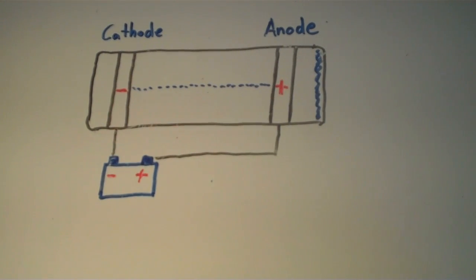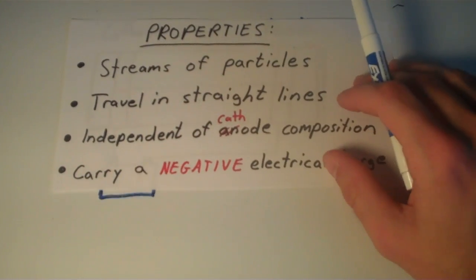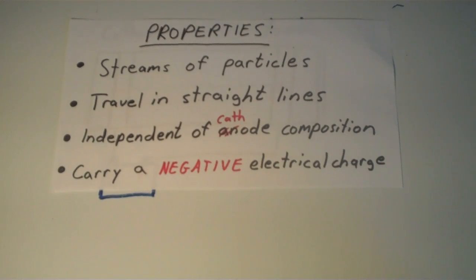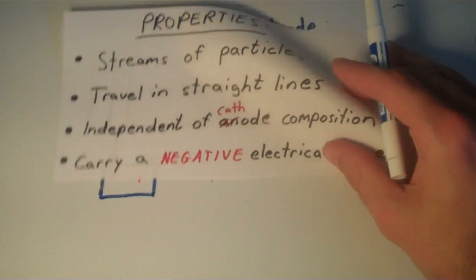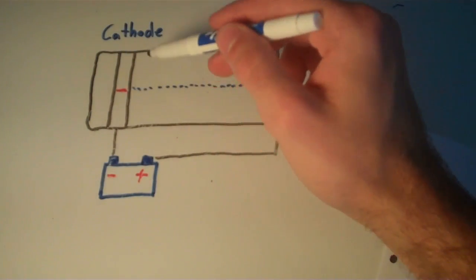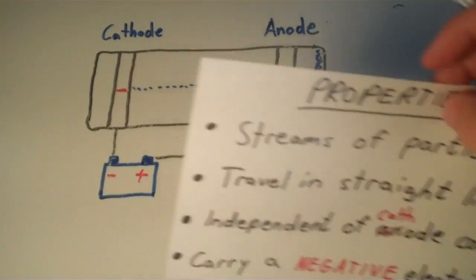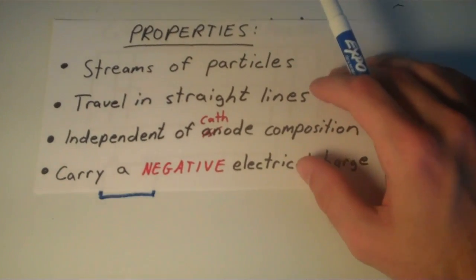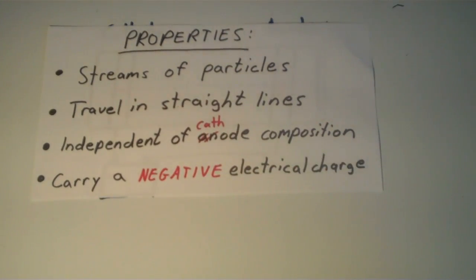In studying cathode rays, J.J. Thompson was able to make a couple of conclusions about the properties of the cathode rays. First of all, he concluded that the cathode rays are actually streams of particles. Secondly, he concluded that these particles travel in straight lines. In addition, he concluded that the cathode rays are independent of cathode composition. So that means it doesn't matter what my cathode is made of. It can be made of anything. The cathode rays are still going to be the same thing and have the same properties. Lastly, he concluded that the cathode rays carry a negative electrical charge.